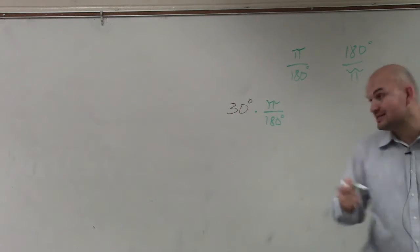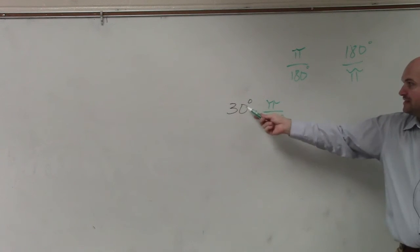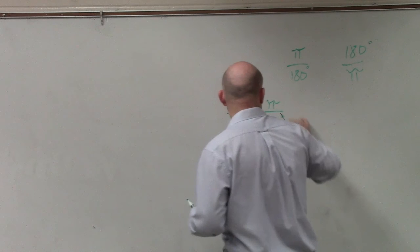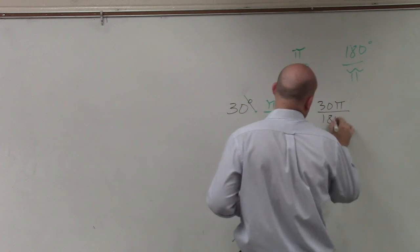What will happen now is now the degrees will divide out, right? So I'll just be left with— so now the degree symbols divide out. So I'm left with 30 pi over 180.